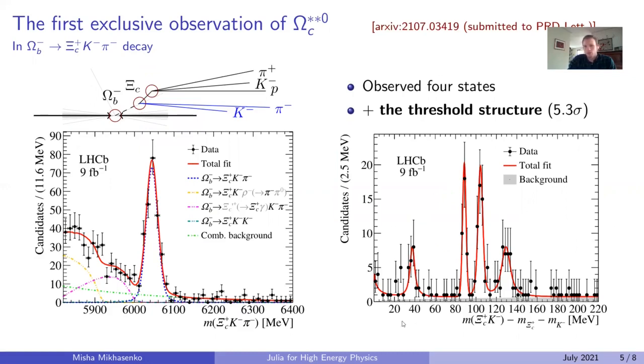We measure the spectrum, where the peaks indicate excited Omega-c states. So the spectrum needs to be fitted by the model, extracting the positions, the widths, and the properties.